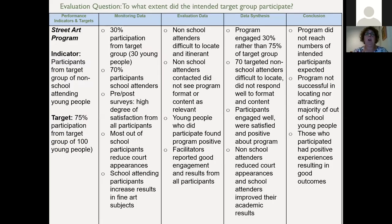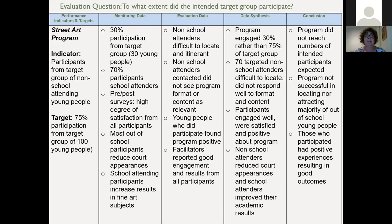In this case study of the Street Art Program, the indicator was participants from the target group of non-school attending young people. The program anticipated a mix of attending and non-attending, but wanted a 75% target for the group to be non-attending young people. In the monitoring data, we found that only 30% of the target group were non-school attending and 70% were school attenders — so we didn't reach that target.